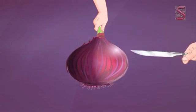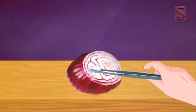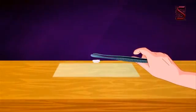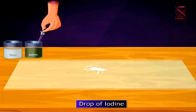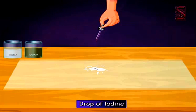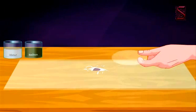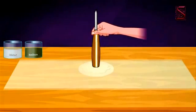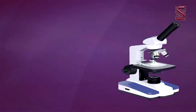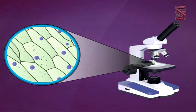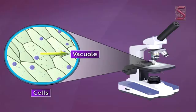We'll begin by cutting it into two halves. Peel off the thin layer using forceps and spread the thin peel on the glass slide. Put a drop of water on it and add a drop of iodine solution. Place a cover slip on it and tap gently with a needle to remove air bubbles. Place the slide on the stage of the microscope. Small chamber-like structures called cells can be observed. Each cell contains a prominent vacuole, nucleus, and cytoplasm.